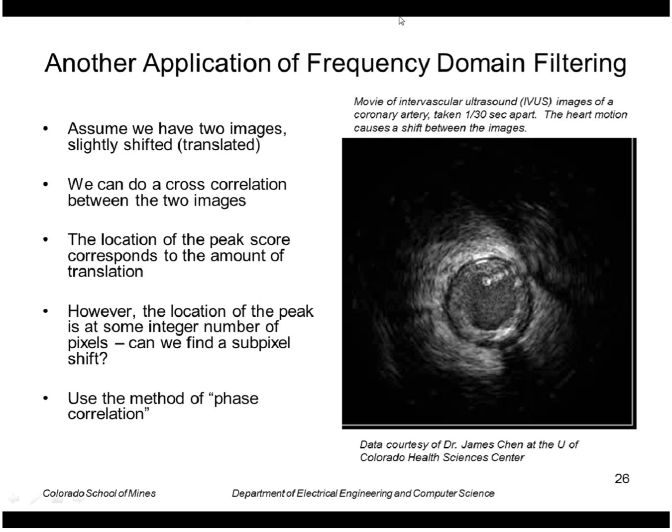Another example of frequency domain filtering allows us to estimate subpixel shifts of images accurately. Assume we have two images, one is translated or shifted with respect to another. Of course we can find that shift by doing a cross-correlation, but the result we look for a peak in the cross-correlation score that tells us the shift, but that is at some integer location.